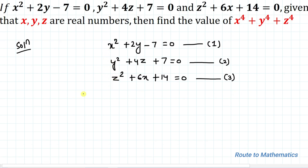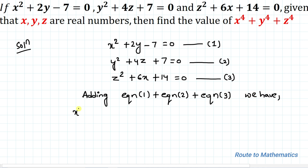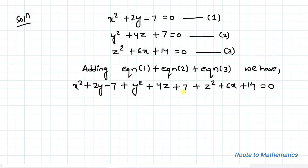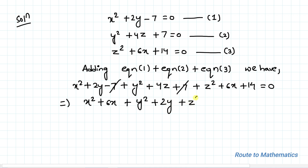In the next step, let's add all three equations together. Adding equation 1 with equation 2 with equation 3, we have x² + 2y - 7 + y² + 4z + 7 + z² + 6x + 14 = 0. The -7 and +7 cancel out. Rearranging, we have x² + 6x + y² + 2y + z² + 4z + 14 = 0.